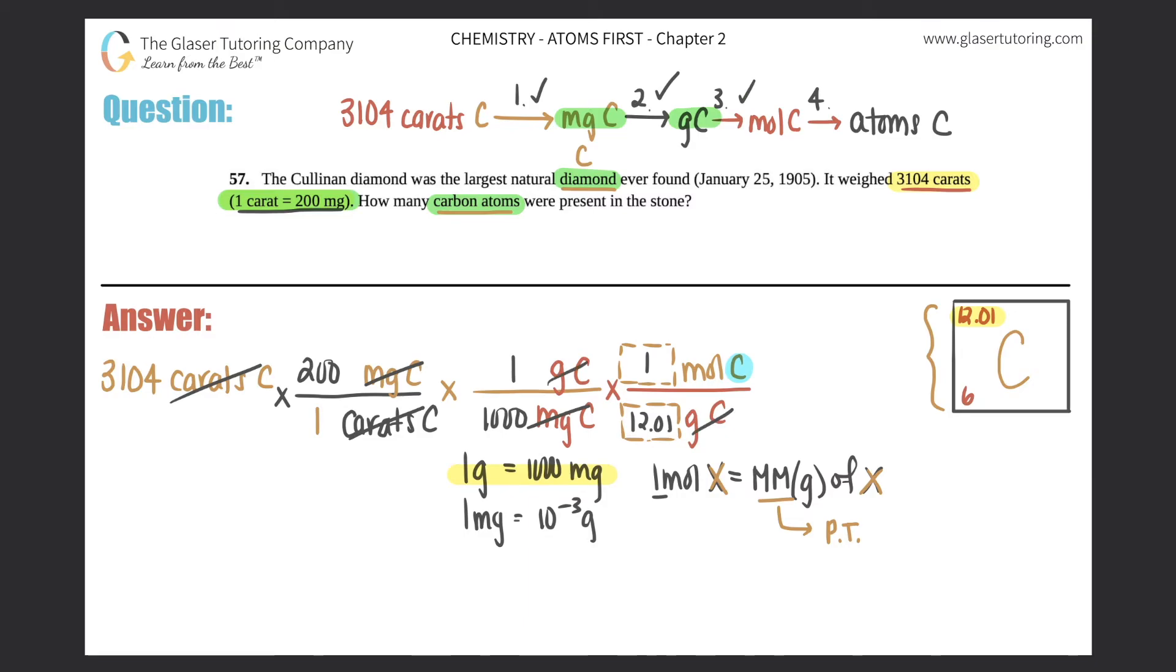One more conversion - multiply by that ratio with mole of C on the bottom and atoms of C on top. The conversion between moles and atoms: one mole of anything equals Avogadro's number, 6.022 times 10 to the 23rd atoms of the same thing. So one mole is 6.022 times 10 to the 23rd atoms. Moles of carbon cancel out and we've finished our fourth part.